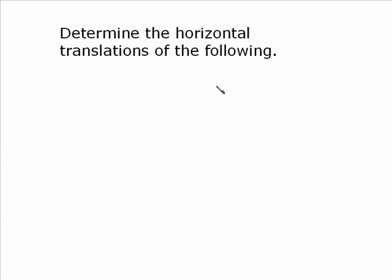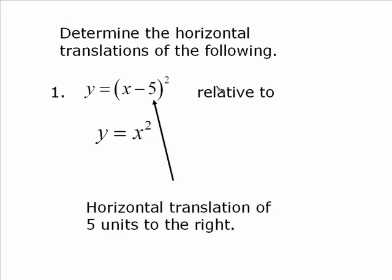And here we identify the horizontal translations of each of the following. So y is equal to (x minus 5) squared relative to y is equal to x squared. Now these are quadratic equations, quadratic functions. The difference is the x has been replaced with x minus 5. So without doing anything more, I see that x minus 5 is moving it 5 units to the right.